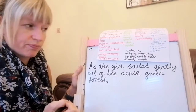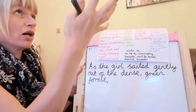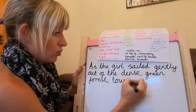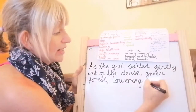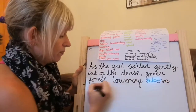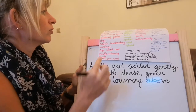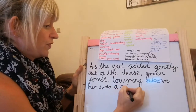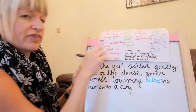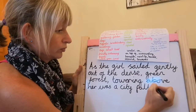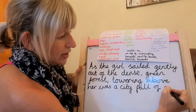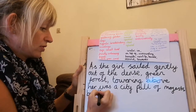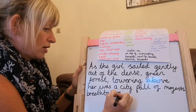What could she see? Towering above her — let's look at my expanded noun phrases. Towering above her was a city full of... and I'm going to use: majestic, comma for list, breathtaking buildings. It was a city full of majestic, breathtaking buildings.